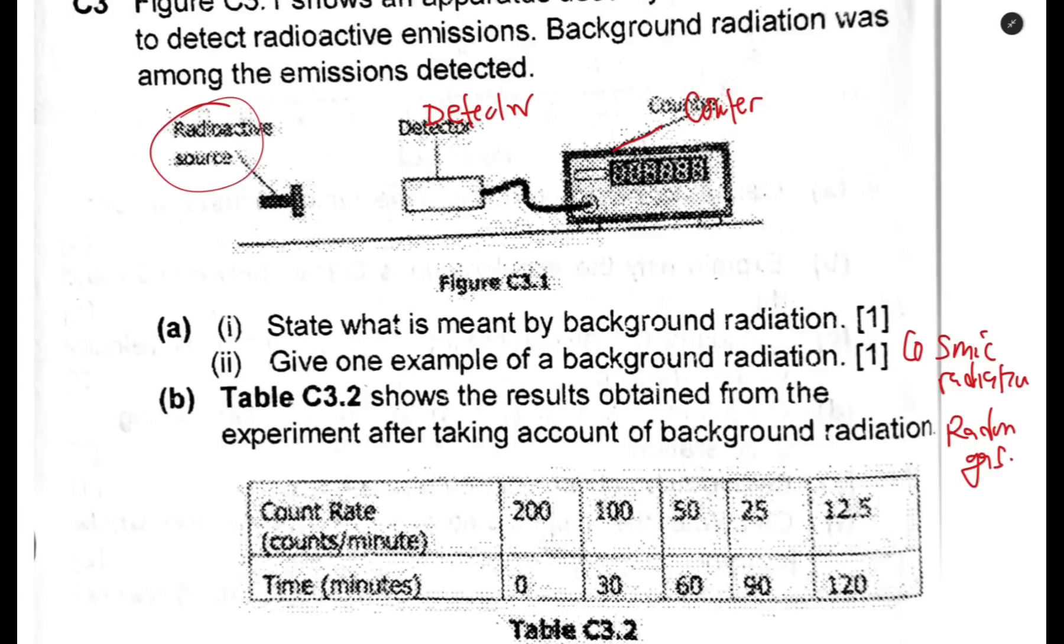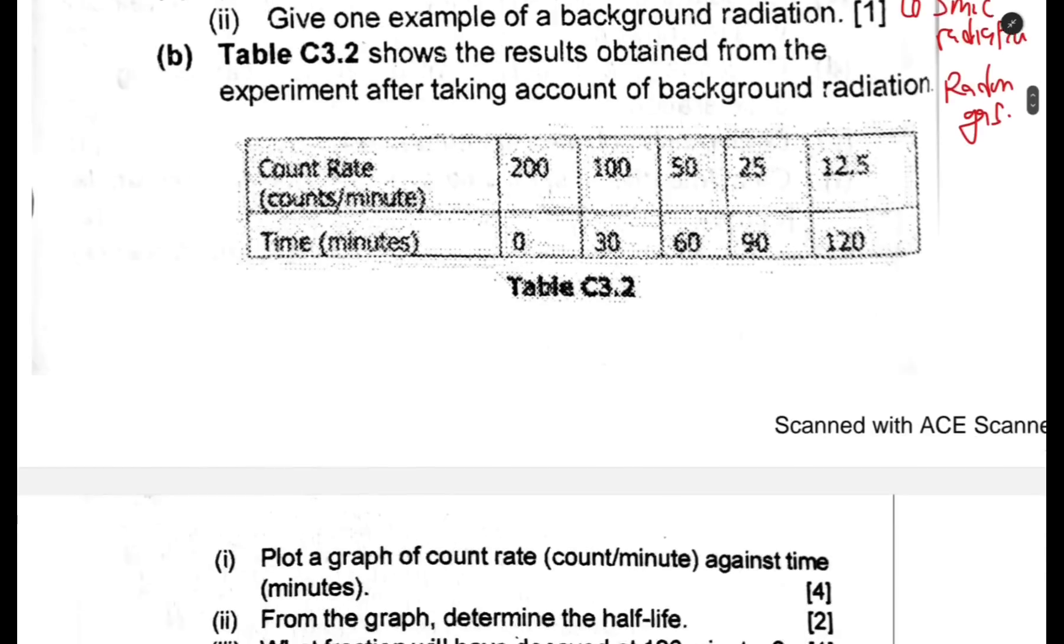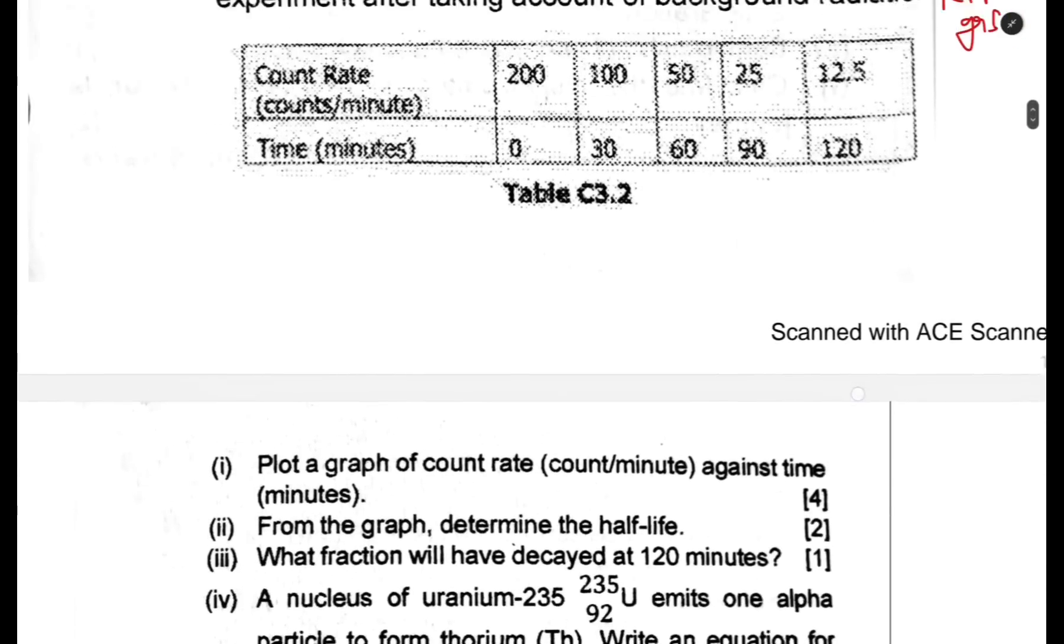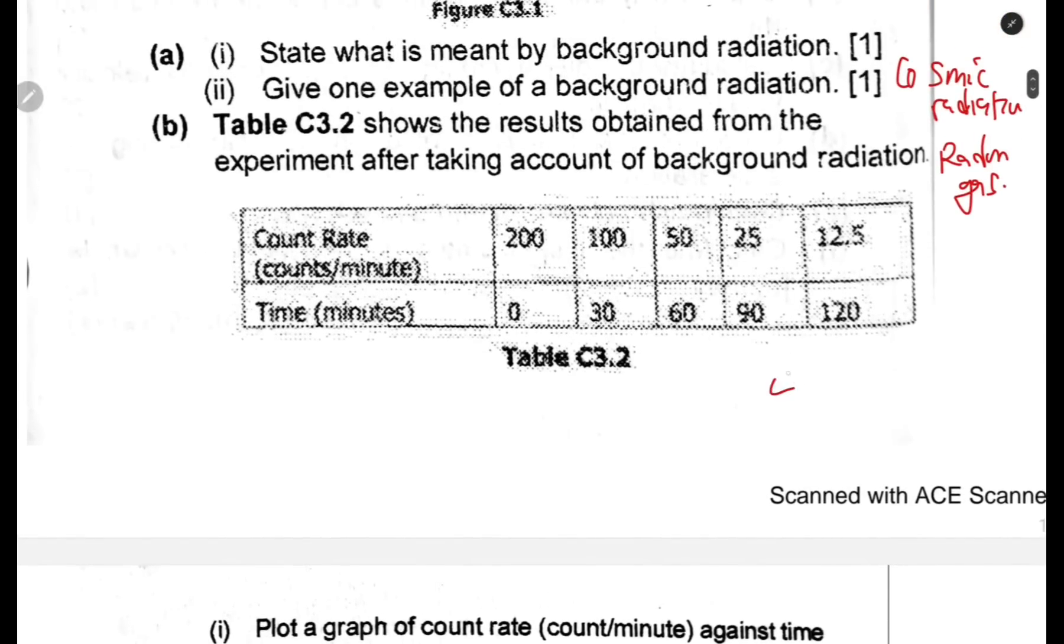For question B, Table C3.2 shows results obtained from the experiment after taking account of background radiation. Sometimes you might be given that the background radiation was, say, 4 at all times, then you are given figures and asked to finish the table. To finish the table, you need to subtract background radiation. If you check among questions on radioactivity, you will come across such a question.